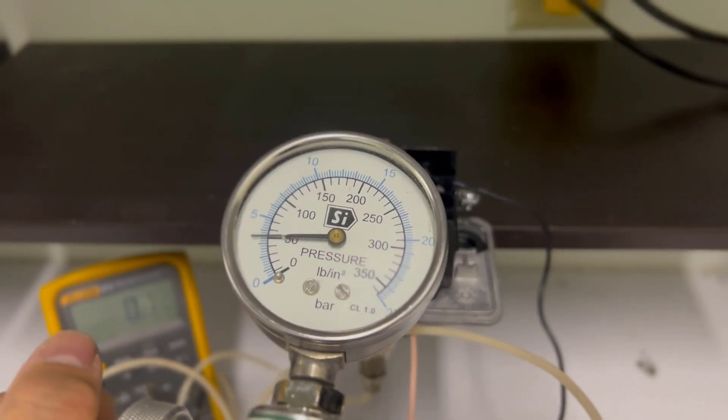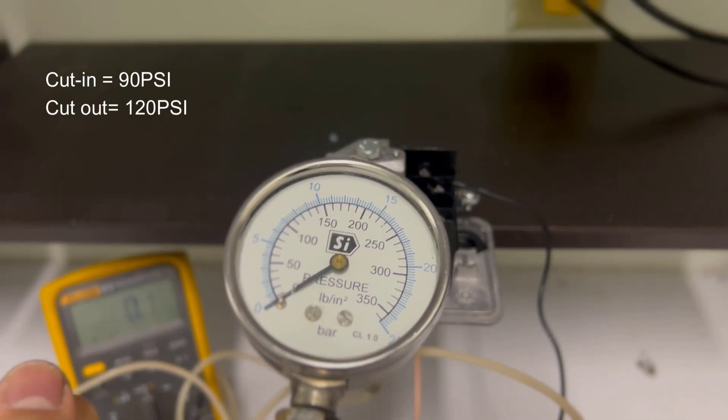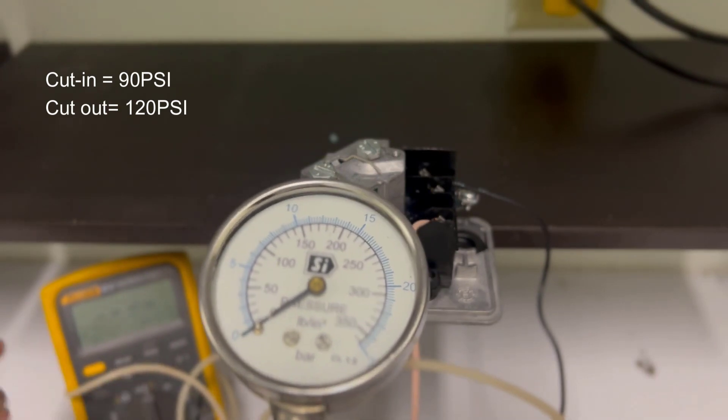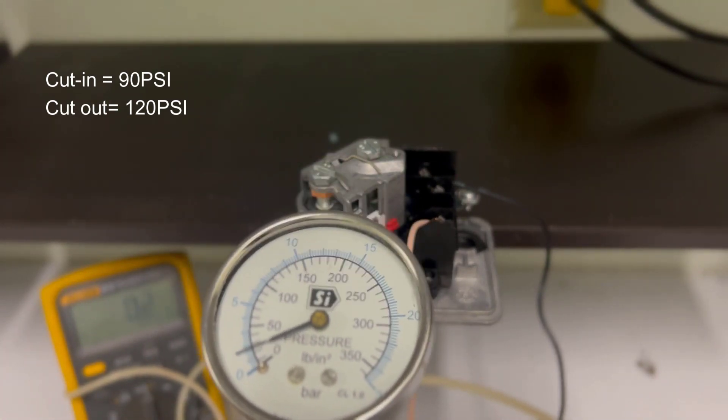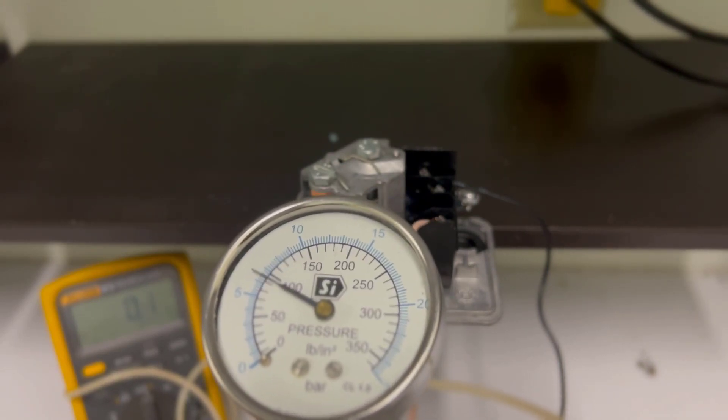For this pressure switch, I will set it to 120 psi for the cut-out pressure and 90 psi for the cut-in pressure set point, which is the standard that we are using on our fire pump system.